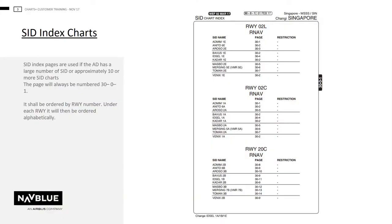If the aerodrome has approximately more than 10 pages, then NAVBLU will create an index page. It should be placed first in the SID chapter with a page number of 30-0-1. The order will be the runway order starting with the lowest.